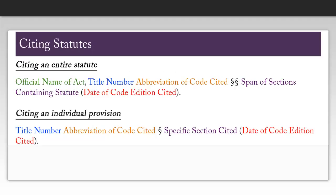You may be required to cite a statute at some point. For citing an entire statute, you would need the official name of the act, the title number, the abbreviation of the code cited, two section symbols, the span of sections containing the statute, and the date of the code edition cited.